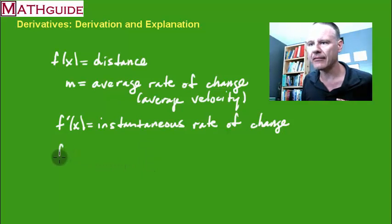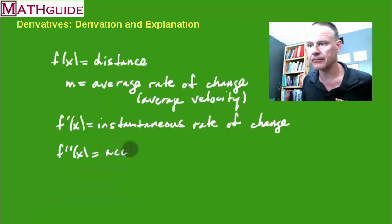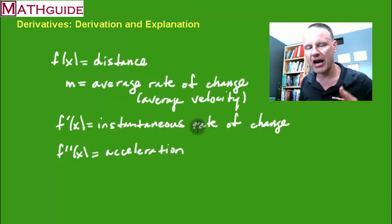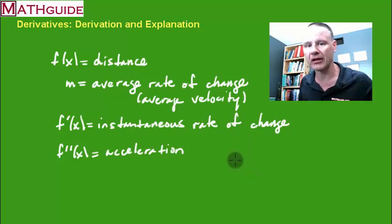we have f double prime, otherwise known as the second derivative. So basically, you take the derivative of the derivative, that would be the second derivative. This is acceleration. So as velocity changes, the change of velocity we call acceleration. So this is the conceptual understanding of what's happening when you're actually taking or calculating a derivative.